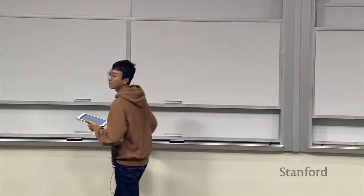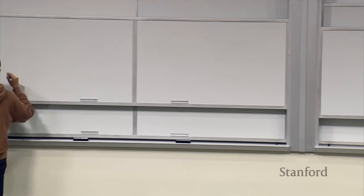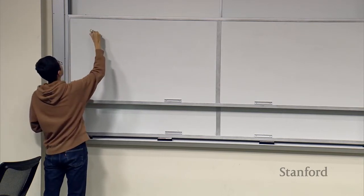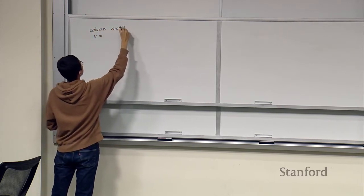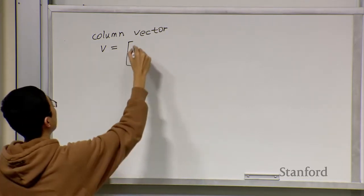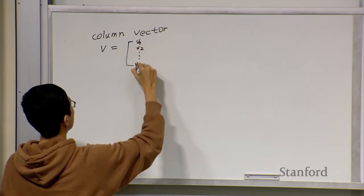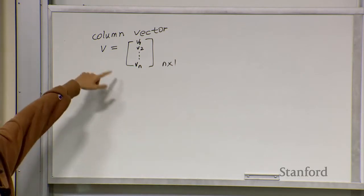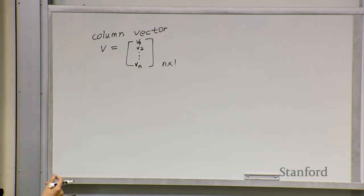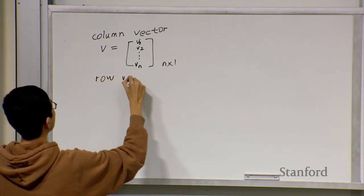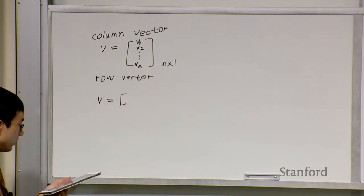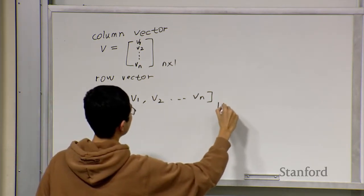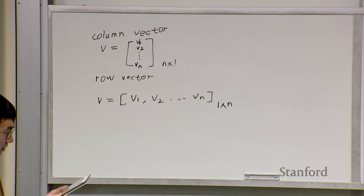First, vectors and vector operations. We start with some very basic definitions about the column vector and the row vector. A column vector v has elements forming a column, so its shape is n times 1 — it has n rows and one column. For the row vector, written as v1, v2, dot dot to vn, the shape is 1 times n, because it has one row and n columns.